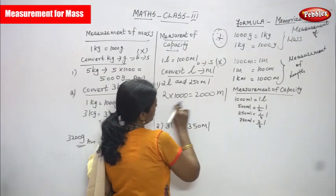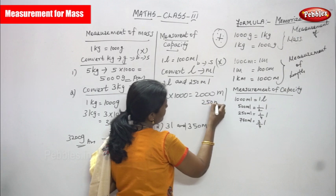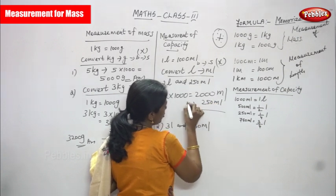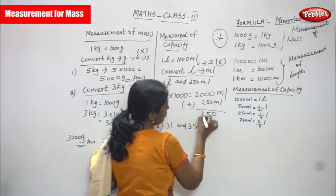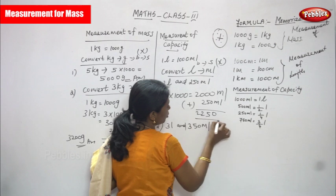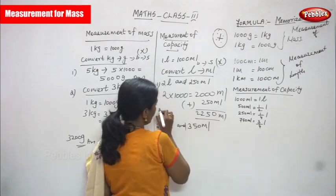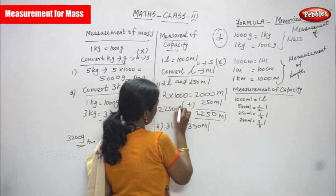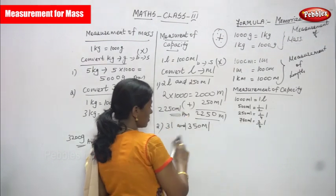We get 2000 ml. Already 250 ml is given in the question, so you must add them together: 2000 plus 250. The answer is 2250 ml. That is the right answer for that question.